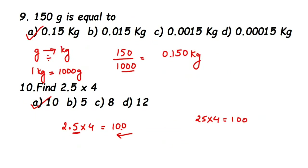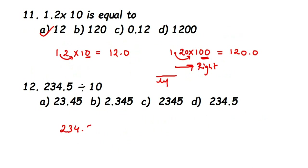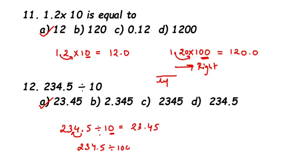Last question: 234.5 divided by 10. Since we're dividing, the decimal moves to the left. There is one zero in 10, so move one place left: 234.5 becomes 23.45, option A. If it were divided by 100 (two zeros), the decimal would move two places left: 234.5 would become 2.345. That covers all 12 questions from different topics — practice these and you'll definitely get a good score in the MCQ section of this chapter.